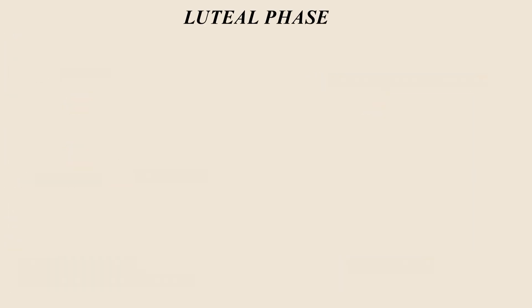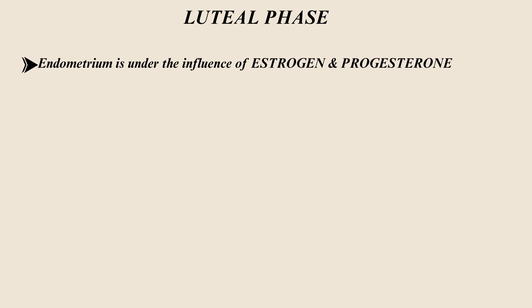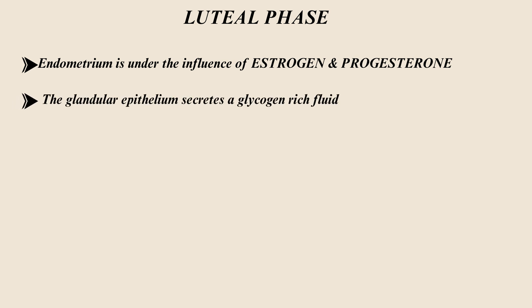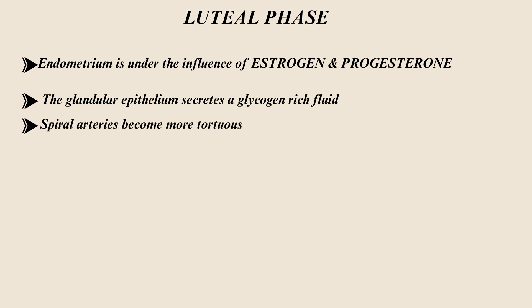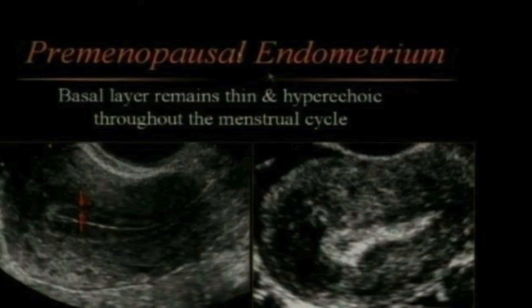In the luteal phase, the endometrium is under the influence of estrogen and progesterone. The glandular epithelium secretes a glycogen-rich fluid, and spiral arteries become more tortuous. The basal layer remains thin and hyperechoic throughout the menstrual cycle, but in the premenopausal endometrium the functional layer becomes more echogenic, so the basal layer is hardly visualized.